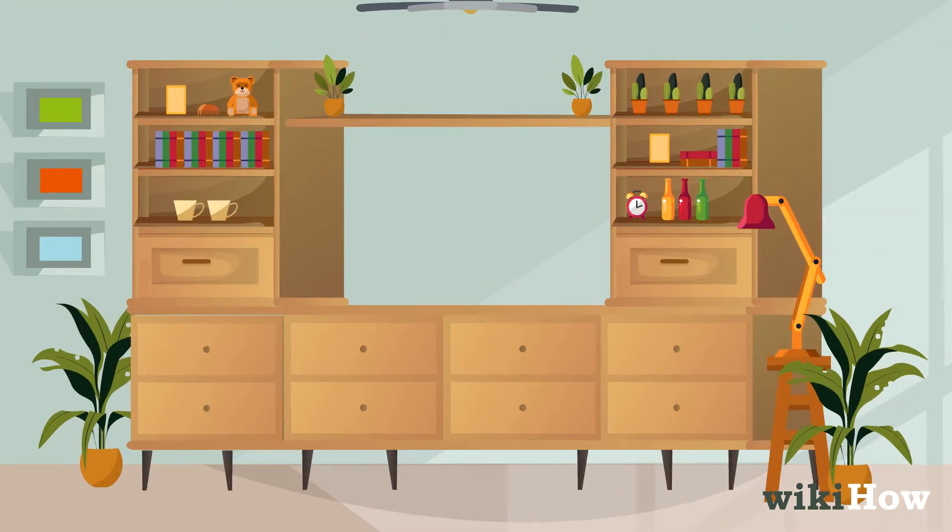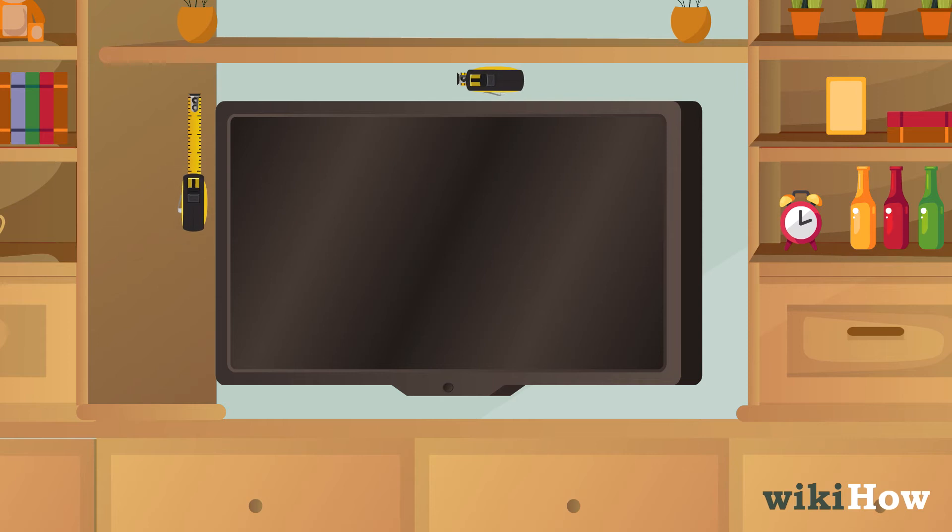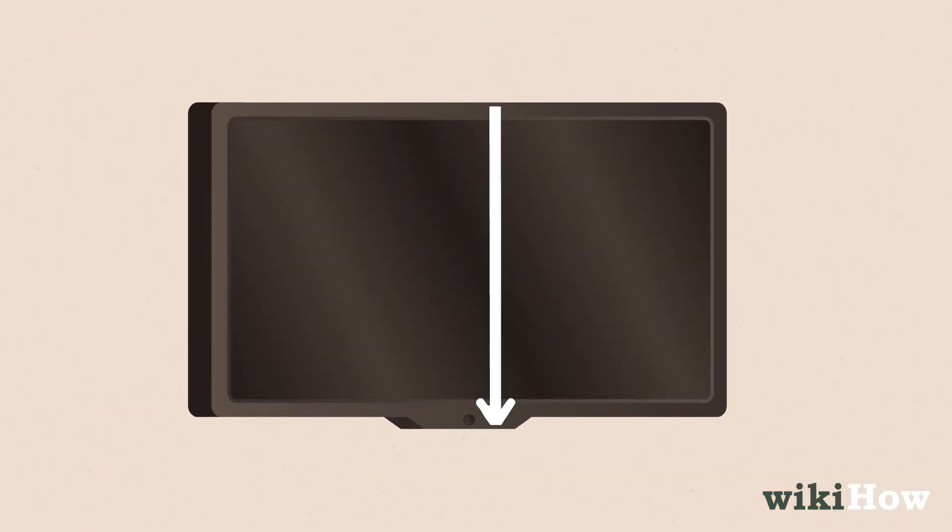If you're checking to make sure the TV fits your space, you'll need to measure its height, width, and depth. Measure straight up from the top of the screen to the bottom to get the height.